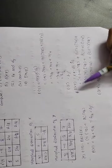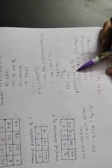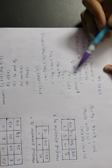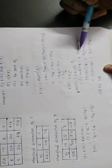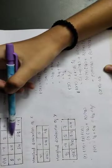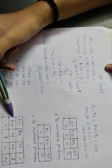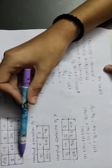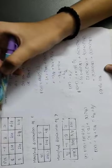Next we compute E of xy, which equals summation of xi, yj, and j of ij. For x1 equal to 1: one into minus four into one by eight, plus one into two into one by four, plus one into seven into one by eight. For x2 equal to 5: five into minus four into one by four, plus five into two into one by eight, plus five into seven into one by eight. By calculating everything, E of xy equals three by two.